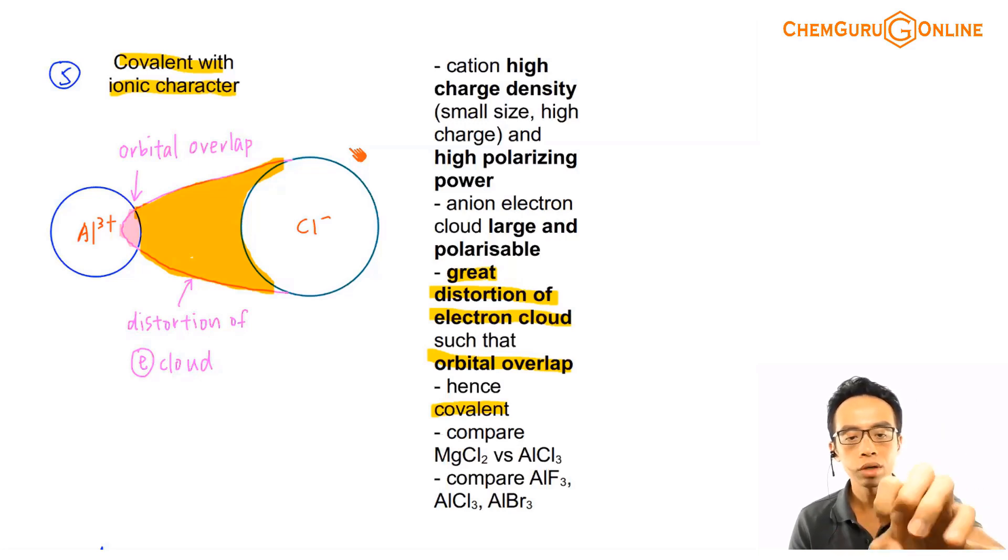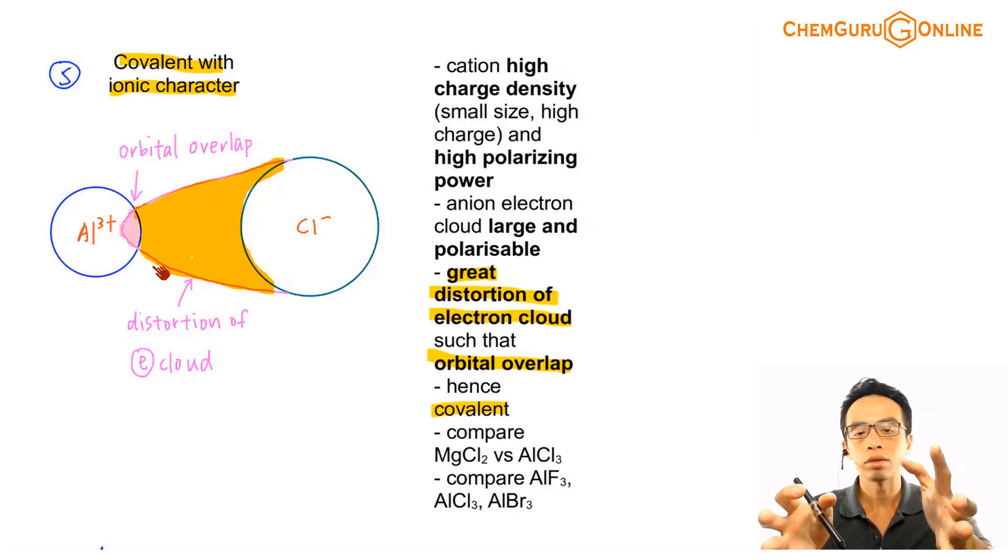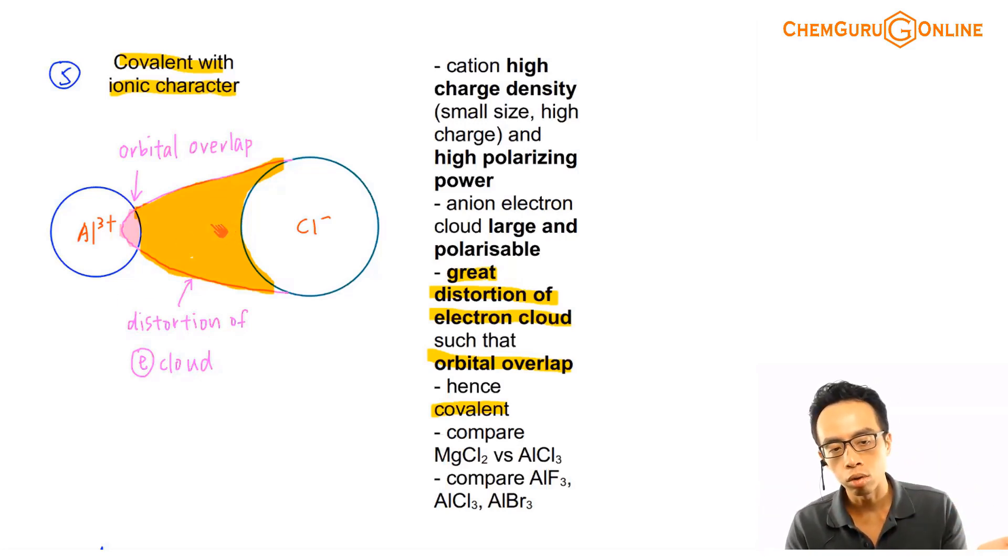It can pull the electron cloud of Cl- towards itself so much that the electron cloud of Cl- will overlap with the electron cloud of Al3+. That means it is so strong and so polarizing, and you pull the electron cloud of Cl- towards itself until the electron cloud overlaps with its own electron cloud.